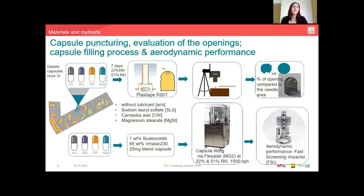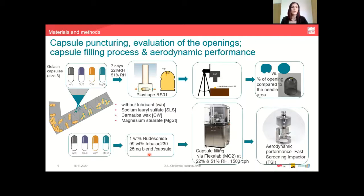We assumed that lubrication of capsules could have an impact on the mechanical and piercing properties of capsules. We pierced these capsules with the PlastiApe device on both sides and evaluated the opening area via camera and ImageJ. We used the area of the needle as our 100% reference and compared it to the actual openings of the pierced capsules. In parallel, all capsules were filled with a blend of 1% Budesonide and 99% Inhalac 230, a lactose carrier. 25 mg of blend was filled per capsule using an automatic capsule filler, Flexalab Mg2, at 22% and 51% relative humidity at a filling speed of 1500 capsules per hour. Aerodynamic performance was then evaluated using a fast screening impactor.